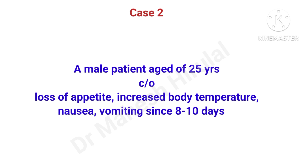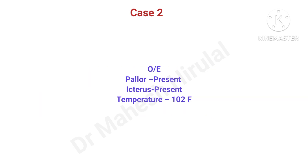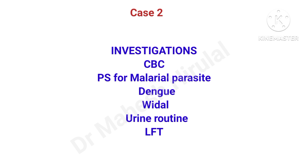A 25-year-old male patient complaining of loss of appetite, increased body temperature, nausea and vomiting since 8 to 10 days. On examination, mild pallor is present, icterus is noticed by the physician, and temperature is 101-102 degrees Fahrenheit. The physician chose investigations including CBC, Malarial Parasite, Dengue, Widal, urine routine, and LFT, because the physician noticed icterus.